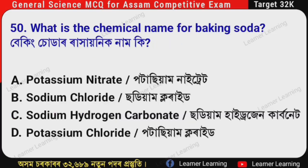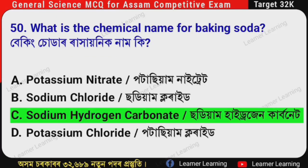Next question: What is the chemical name for baking soda? (Assamese: Baking soda ra khayunik naam ki?) The correct option is Option C — Sodium hydrogen carbonate. The chemical name of baking soda is Sodium hydrogen carbonate.